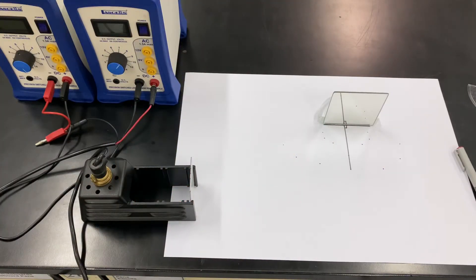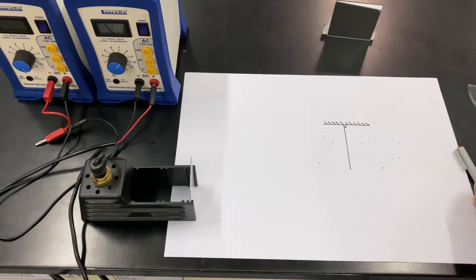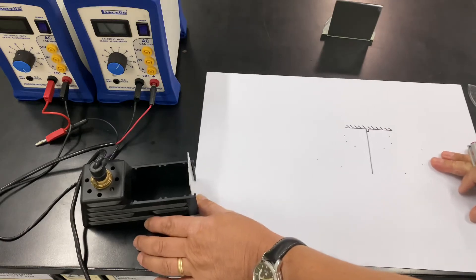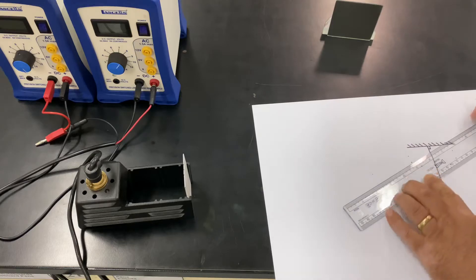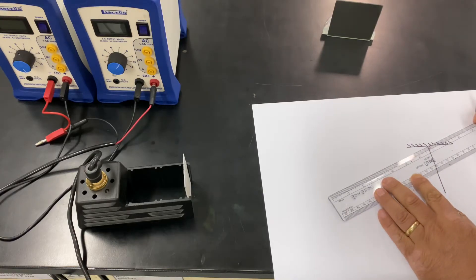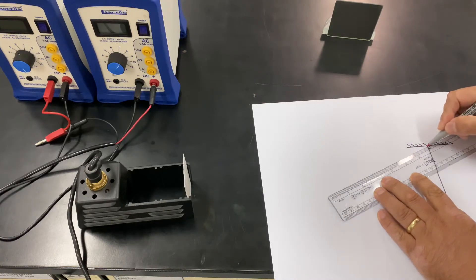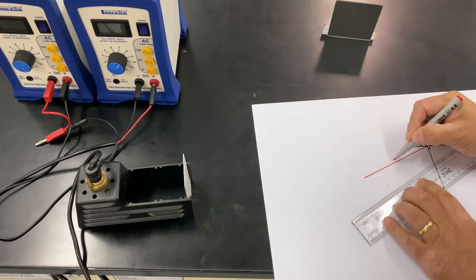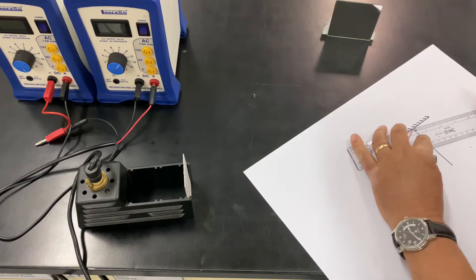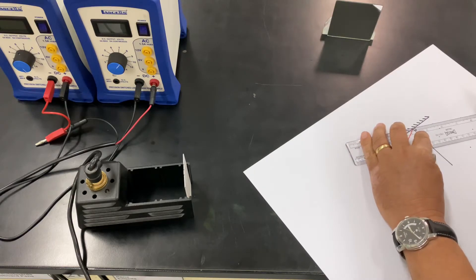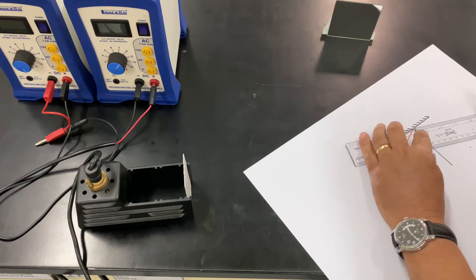And then we can have a look plotting our rays. Right. The first angle, I believe, is red. Okay. So red coming in. Right. Incident ray.